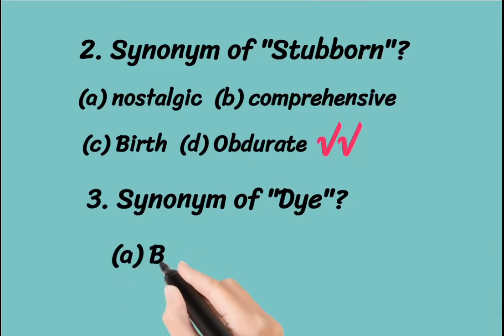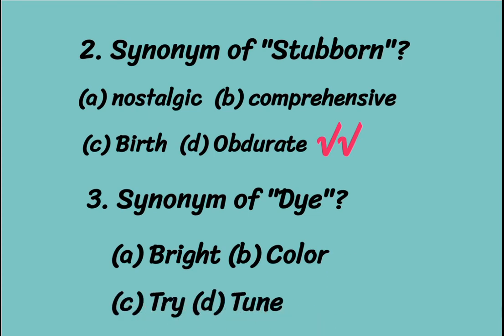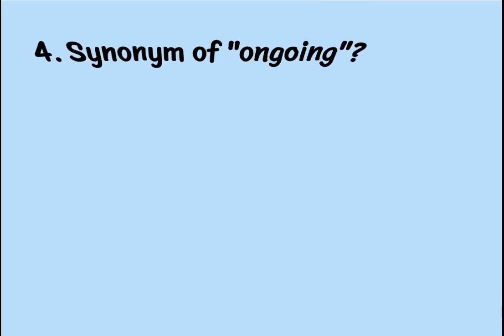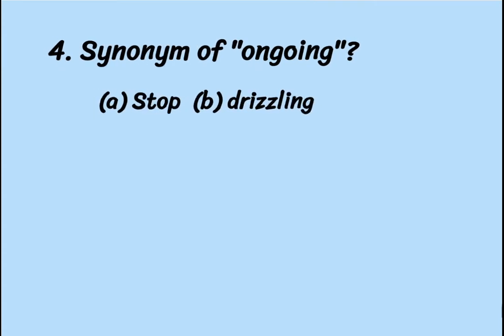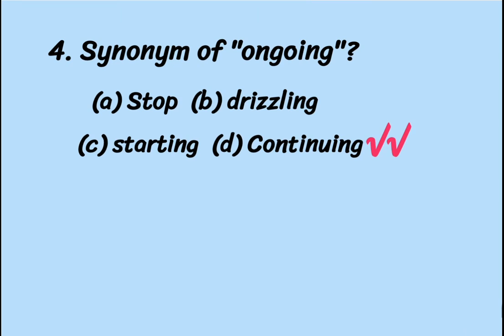The third synonym question: synonym of 'dye' (D-Y-E). Options are: A — bright, B — color, C — try, D — tune. Dye means 'rang badalna' (to change color), so option B — color — is correct, meaning 'rangna' or to change color. The fourth question: synonym of 'ongoing.' Options are: A — top, B — drizzling, C — starting, D — continuing. Ongoing means continuing — something that continues at the time of speaking. So 'ongoing' and 'continuing' are synonyms. Option D is correct.